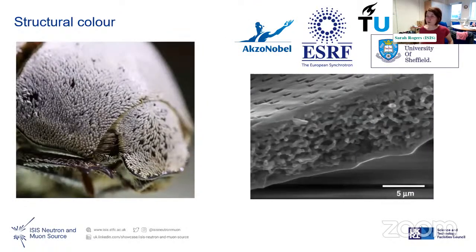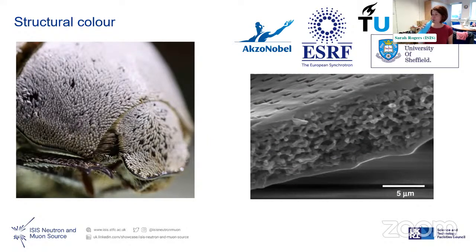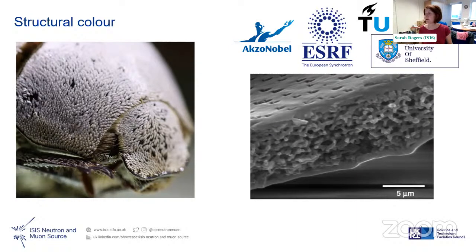Structural colour is something that comes up a lot on the Spin Echo instrument because it's a larger length scale problem — we're interested at the micron length scale. A small white beetle, one of the whitest beetles ever, achieves its whiteness purely through structure. Researchers such as Axel Neville are interested in understanding how this creature manages to be so white, with applications to paint — currently titanium dioxide is used, which is environmentally unfriendly.